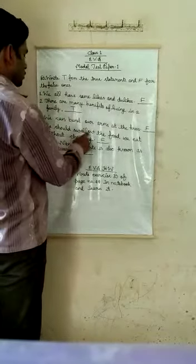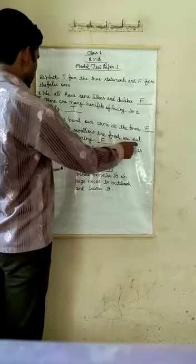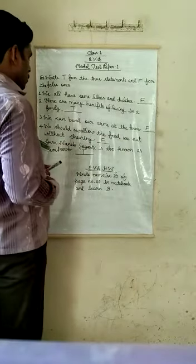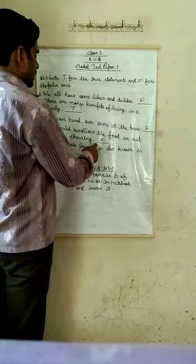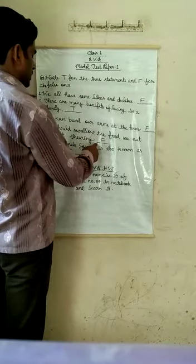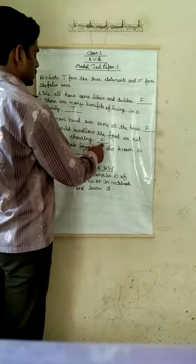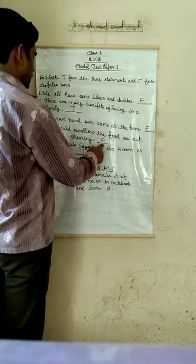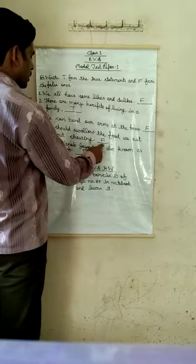Fourth, we should swallow the food we eat without chewing. This is wrong statement. We should chew the food well. So here write F for false.